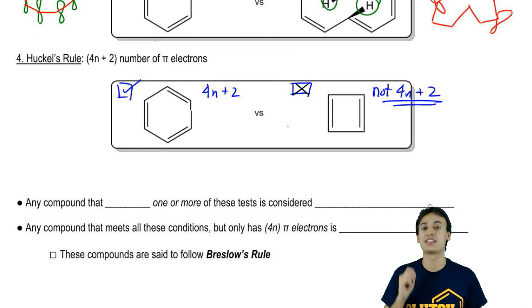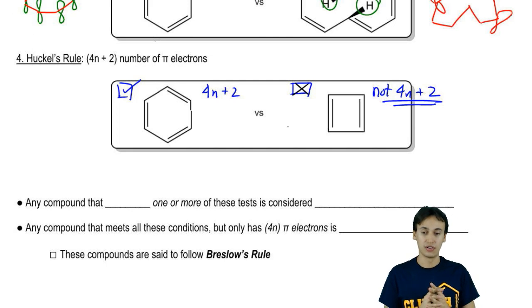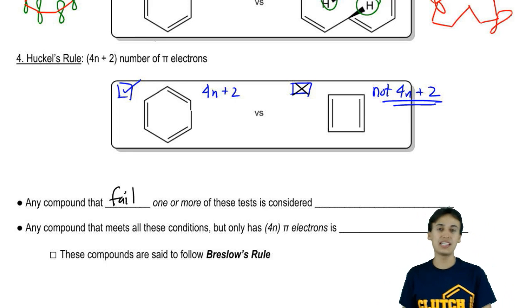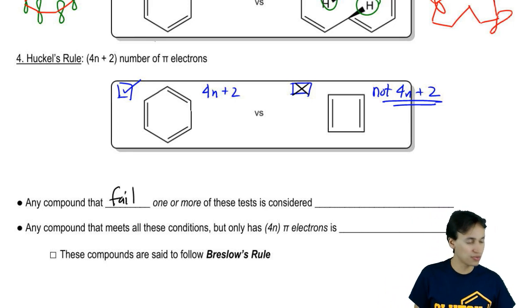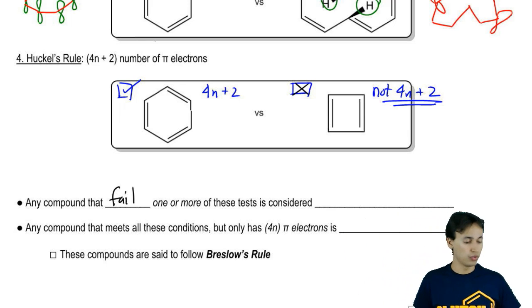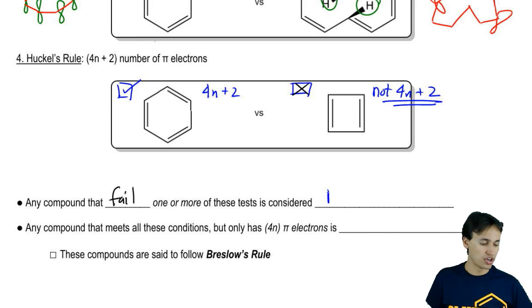Now let's talk about what it means to pass the test and what it means to fail them. If you pass all the tests, then you're considered aromatic. But how about if you fail one or more of the tests? What does it mean to fail a test? Failing a test could be I'm not planar, it could be I'm not cyclic, it could be I am not fully conjugated. Those would all be failures of Huckel's rule or of these four tests. We would consider them non-aromatic.